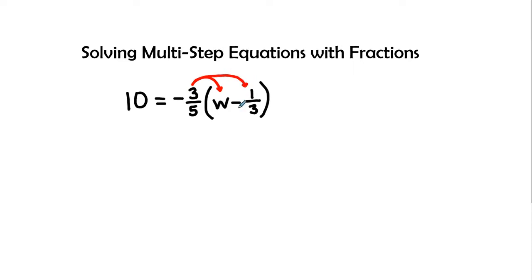I'm definitely going to take the sign that's in front of the one-third when I do the distributive property. So we're going to go ahead and bring this 10 down. We don't need to work with it right now. Then we see negative three-fifths times w is a negative three-fifths w.